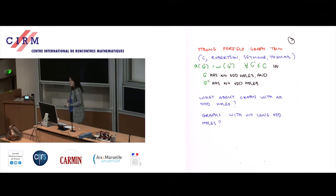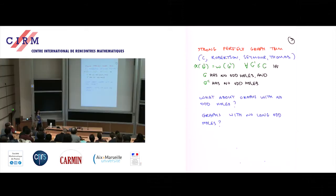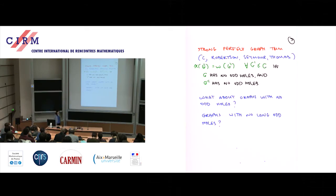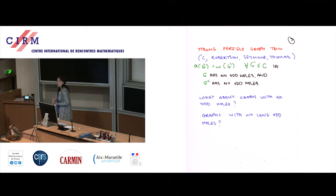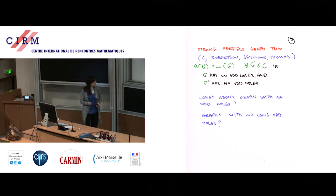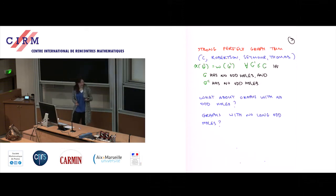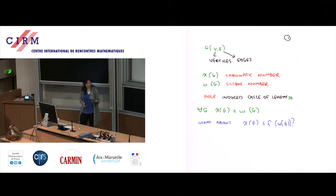That happens if and only if the graph doesn't have any odd induced cycles of length at least five, and the same in the complement — no odd induced cycles in the complement of length at least five. I've given a lot of talks about this so I won't cover it today. The new question is: what if I only exclude induced cycles in the primal? For example, what if I say no odd induced cycles except triangles, or no odd induced cycles of length bigger than a million? There is hope to get chi bounded by some function of omega.